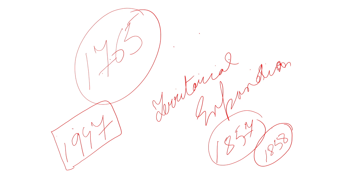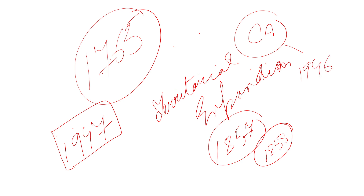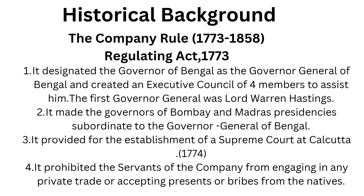When India got independence in 1947, India felt the need for a constitution. This constitutional need arose because along with independence there was a need for rules, regulations, and laws to govern India. This constitutional need was fulfilled by the Constituent Assembly. The Constituent Assembly came into being in the year 1946 and through it the constitution was framed. Ultimately, the Constitution came into force on 26th of January 1950 — the day we celebrate as Republic Day.